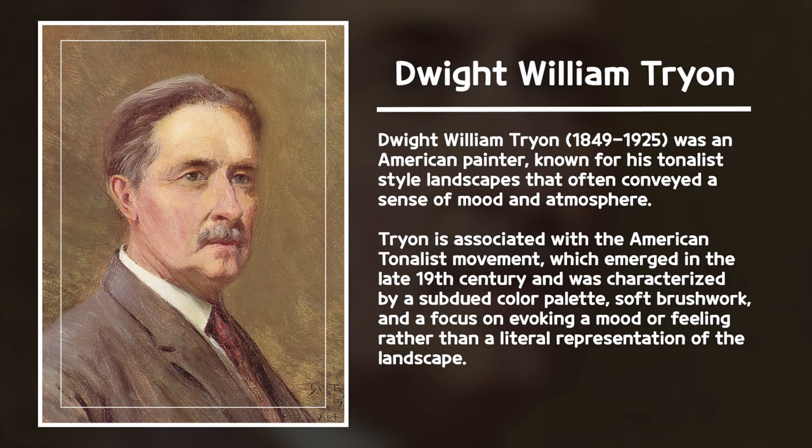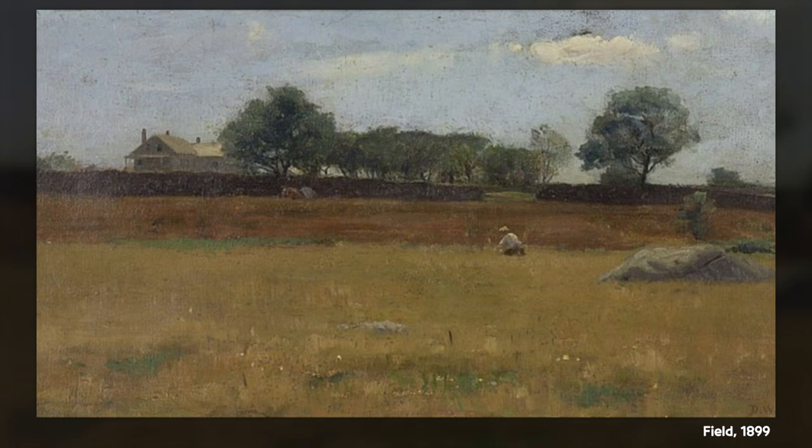Hello, this is Morning Gallery. The artwork I will introduce today is the work of Dwight William Treon. Dwight William Treon, 1849–1925, was an American painter, known for his tonalist-style landscapes that often conveyed a sense of mood and atmosphere. He was born in Hartford, Connecticut and studied at the Boston Museum of Fine Arts School and later in Paris at the Académie Julian.